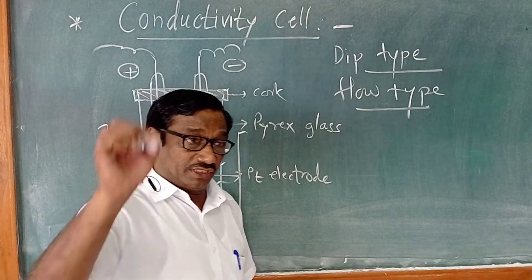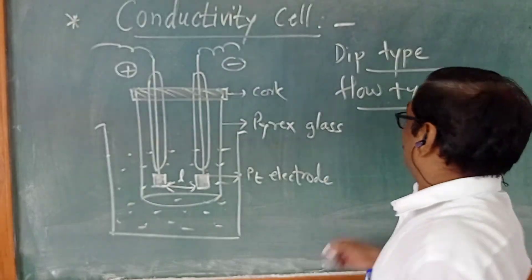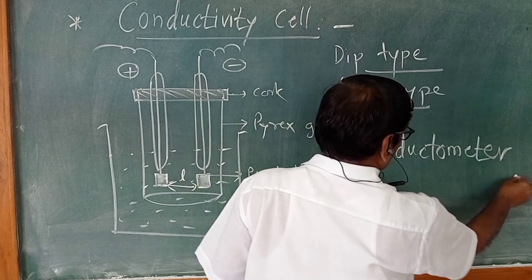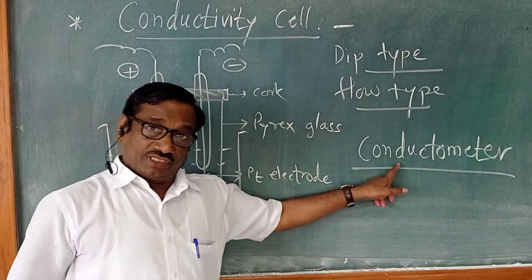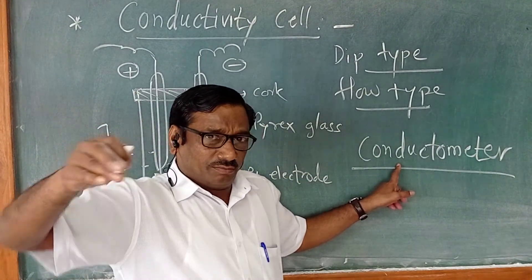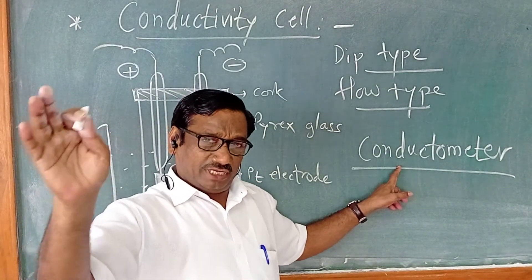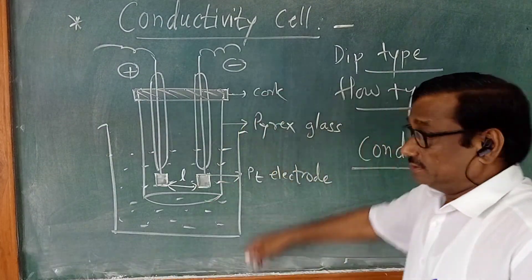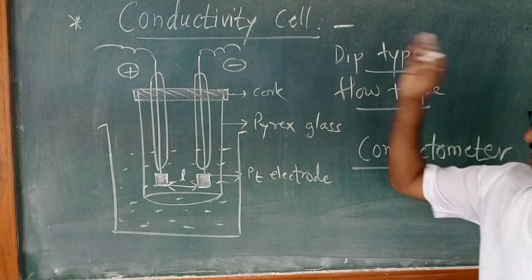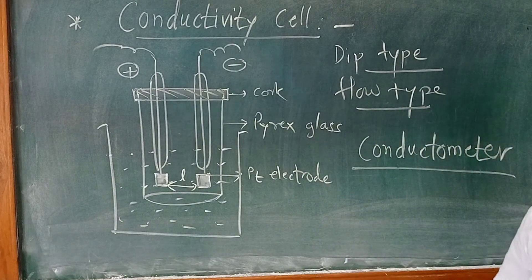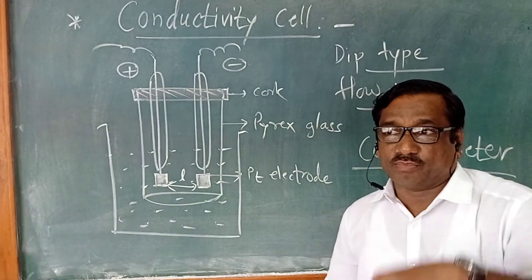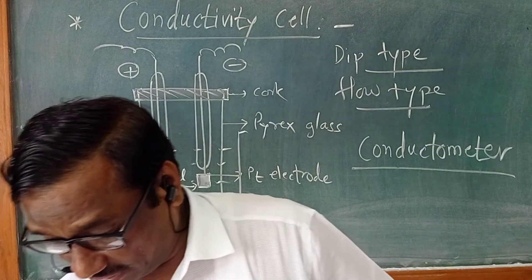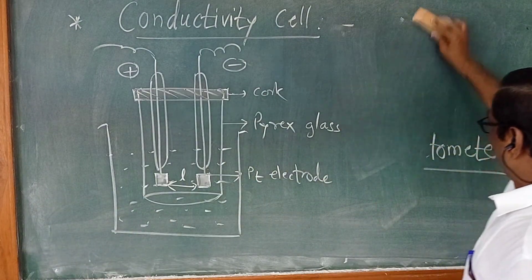This conductivity cell will measure the resistance of an unknown solution. The instrument used is called a conductometer — a small digital electronic instrument made by many companies and available in the market. The terminals of the conductivity cell are attached to the conductometer. You dip the conductivity cell in the beaker where the electrolyte solution is taken, and you will get the conductance or resistance of that solution.